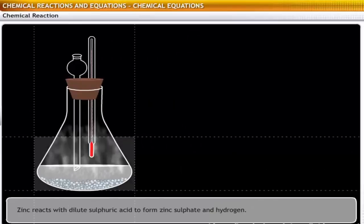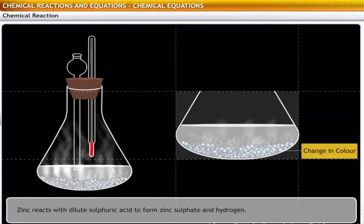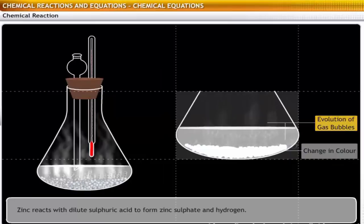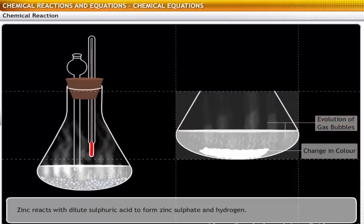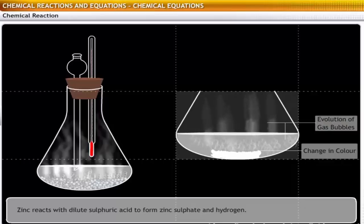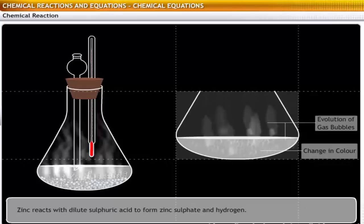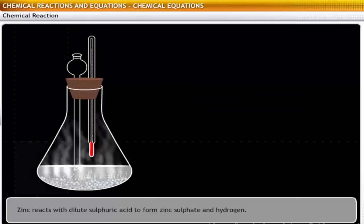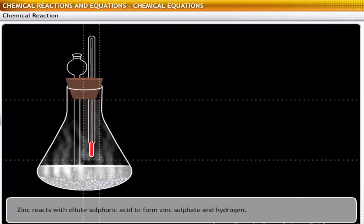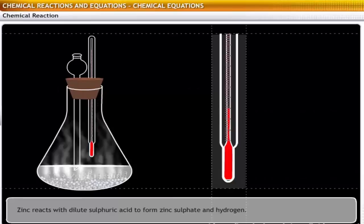The color of the zinc granules changes from blue-gray to white. Some gas bubbles are also released from the solution. This is because zinc reacts with sulfuric acid to form zinc sulfate and hydrogen gas. Zinc sulfate is white in color. The thermometer shows an increase in the temperature of the solution.